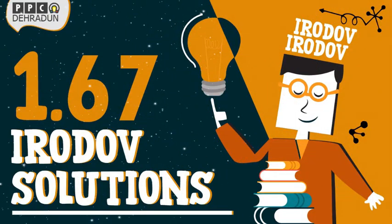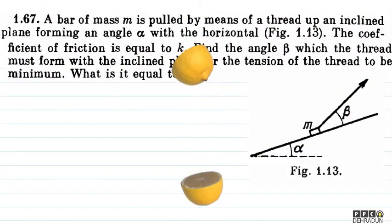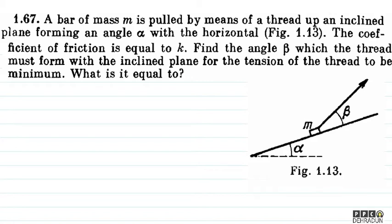Hello everyone, I am Sakeet Bajpayee, Director of Prayas Physics Classes, Dehradun. Let's have a look at this beautiful problem from Irodov. A bar of mass M is pulled by means of a thread up an inclined plane forming an angle alpha with the horizontal. The coefficient of friction is equal to k. Find the angle beta which the thread must form with the inclined plane for the tension of the thread to be minimum. What is it equal to?